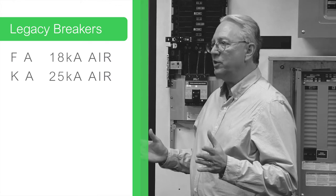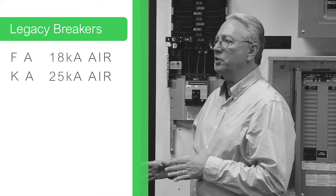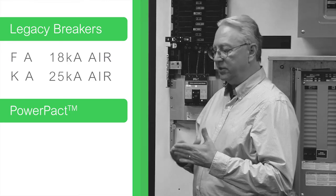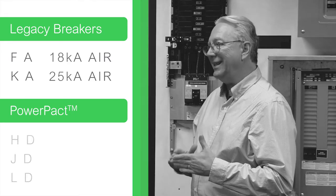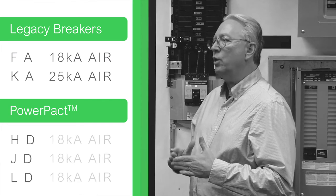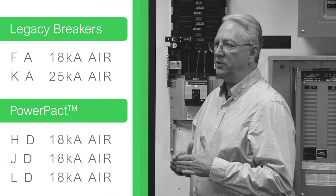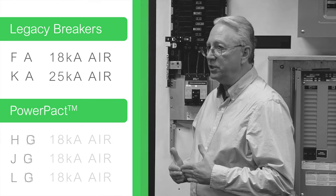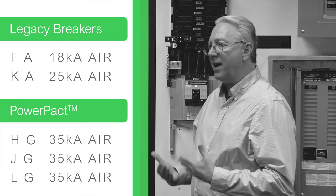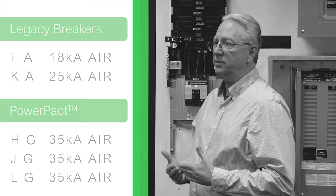We've taken that mystery out with the power pack breakers. Now if the second character is D, it can withstand 18,000 amps regardless of what the frame size is. If the second character is G, it can withstand 35,000 amps regardless of what the frame size is.